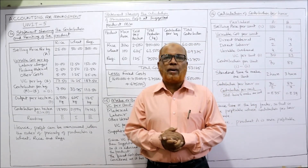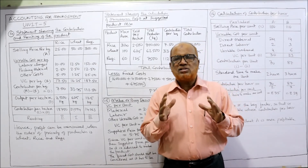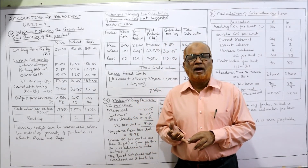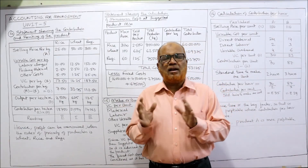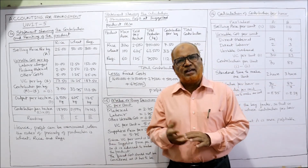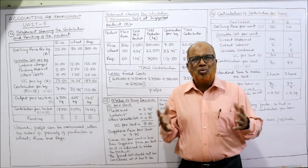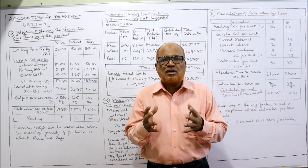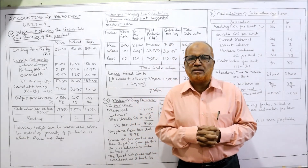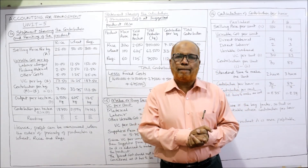In this unit, one more part is there — standard costing and variance analysis. In the next video I will start that topic. These 16 problems are enough for facing problems on CVP analysis. If you are satisfied, give a like to the video, share my channel among your groups and friends so more students can watch and enhance their knowledge. Subscribe if you haven't yet, give your comments, and support by the Super Thanks below the video.